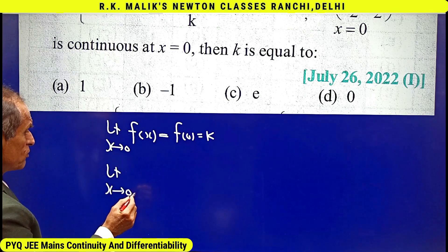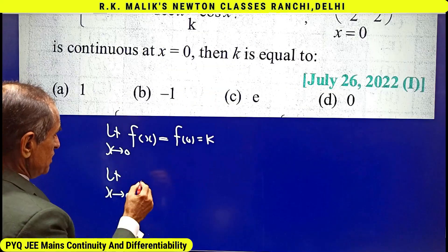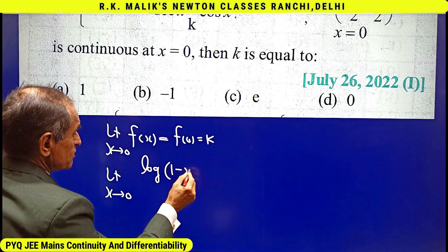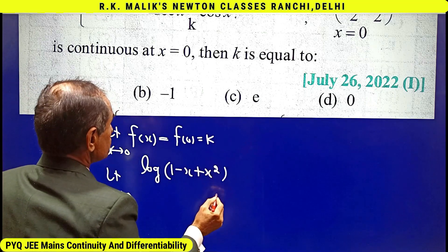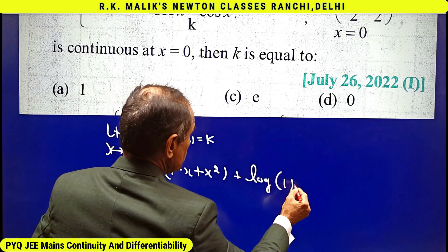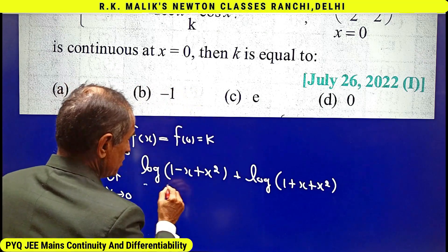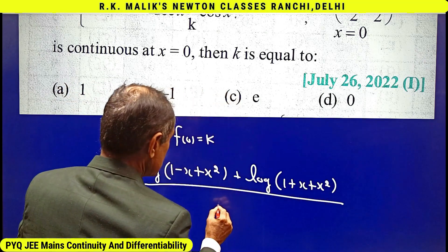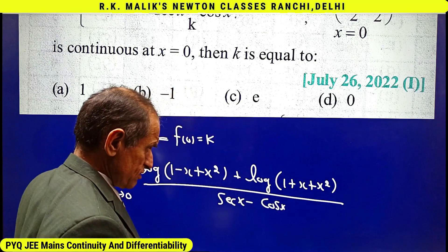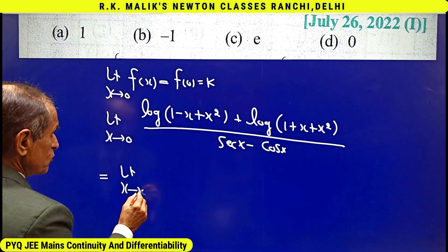The value of f(x) is log of (1 - x + x²) plus log of (1 + x + x²) upon sec x minus cos x. This is equal to limit x tends to zero.